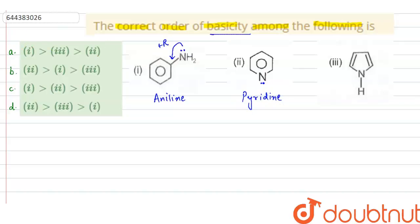Pyridine will be most basic among these three because if you see in third option, here we have nitrogen. It has a lone pair but these electrons are involved in conjugation due to which this is aromatic in nature.